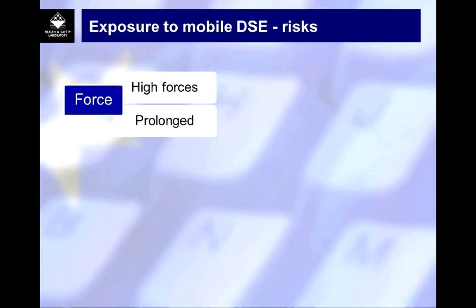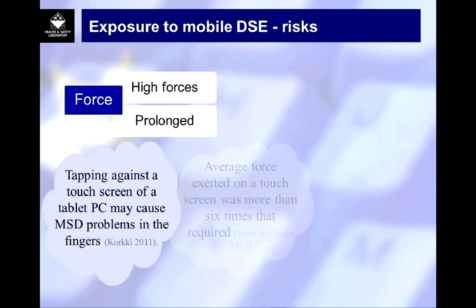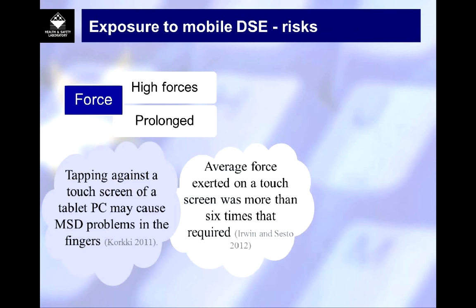Looking at force as another common risk factor for musculoskeletal disorders — is it really an issue for tablet PCs and mobile phones? Corlett's findings suggested that people are possibly at risk of suffering problems with the nerve endings in their fingers from touch screens. Owen and Sesto found that people are touching touch screens about six times harder than required — we're all frustratedly tapping on our touch screens with too much force. So it may be an emergent issue.